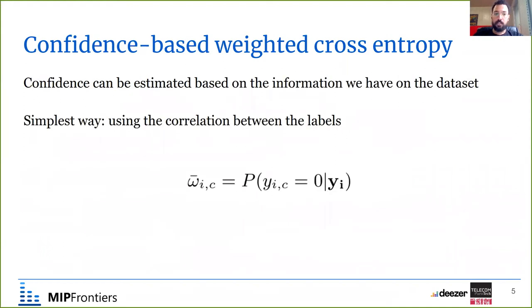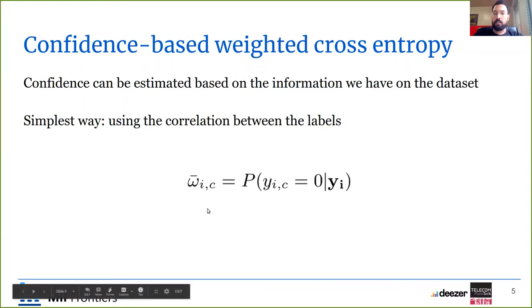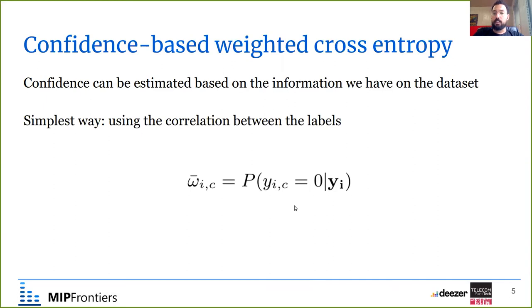These confidence weights can be estimated using different information we have about the dataset. The simplest and always-available way to compute the weights is using the correlation between the labels. Basically, for computing the weight for a sample-label pair, we predict the probability that this sample-label pair is indeed zero given the rest of the labels, which is commonly done using the correlation or co-occurrences between the labels.